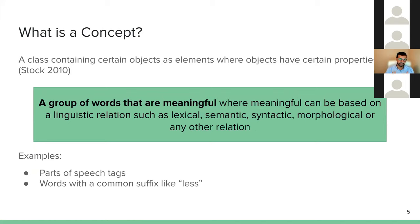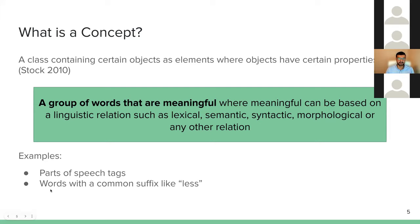The second definition I'll go through is 'concept.' According to Stock, a class containing certain objects with certain properties is called a concept. In NLP, we define a concept as a group of words that are meaningful, where meaningful can be based on a linguistic relation — lexical, semantic, syntactic — or any other relation. For example, part of speech tags are concepts where words are grouped based on morphological properties. You can also think of lexical concepts like words with a common suffix such as '-less' — they have a coherent relationship, so they would be called a concept.